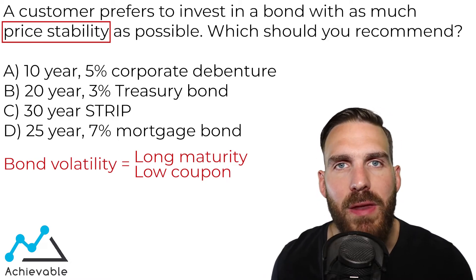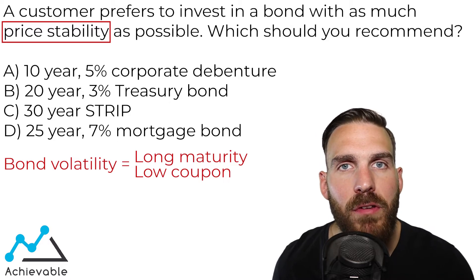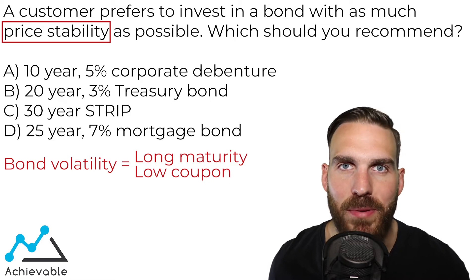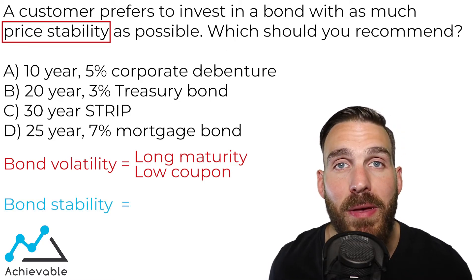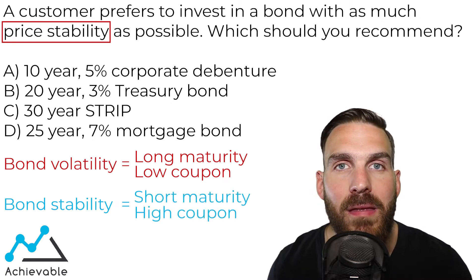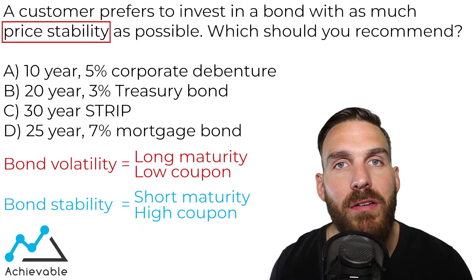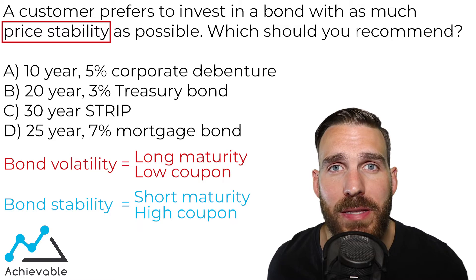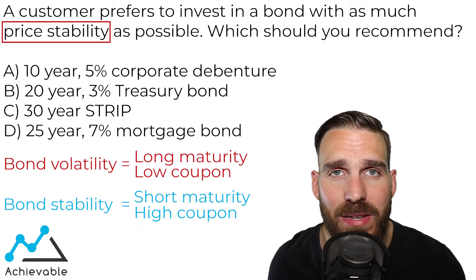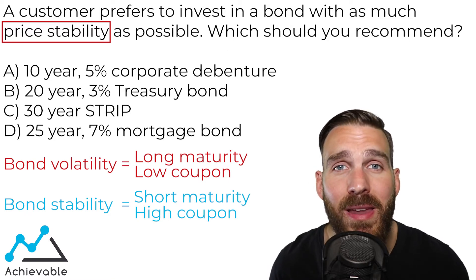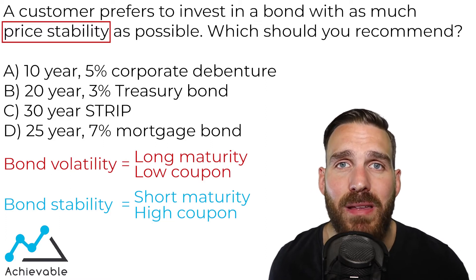So if bond volatility is related to long-term maturities and low coupons, then stability must be the exact opposite. The bond exhibiting the most price stability will have a short-term maturity and a high coupon. Looking at the answer choices, we have a wide range of maturities — 10 years at the low end and 30 years at the high end. The 10-year bond has the shortest-term maturity, and therefore is likely the best answer.